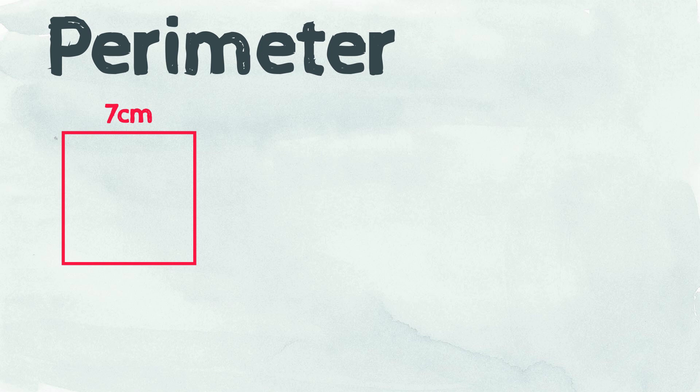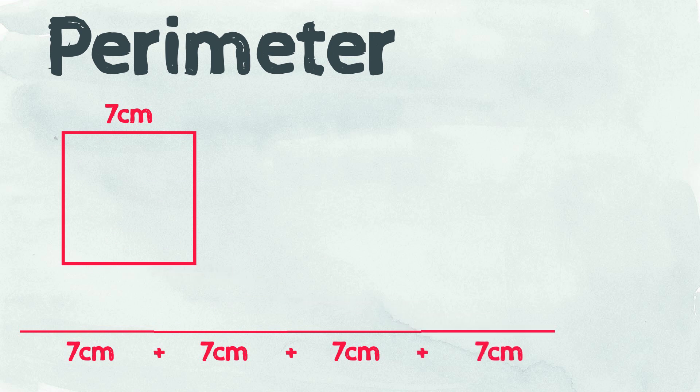Take this square for example. It has sides of seven centimeters. Seven plus seven plus seven plus seven equals 28 centimeters. The perimeter of this square is 28 centimeters.